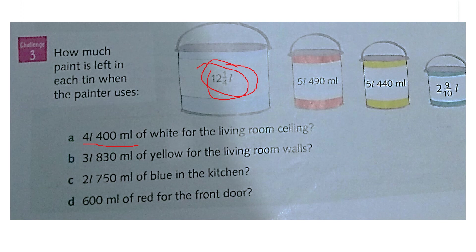Part B: how much paint is left when the painter uses 3 liters 830 milliliters of yellow for the living room walls? Find the yellow paint tin in the image. 'How much is left' means minus — do not add. You can do it! Please replay this video if you don't understand certain parts. Bye!